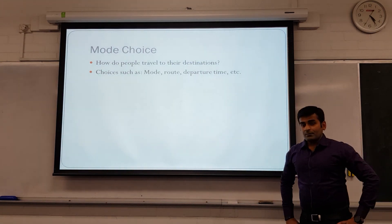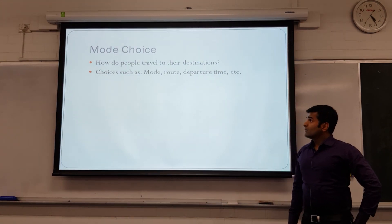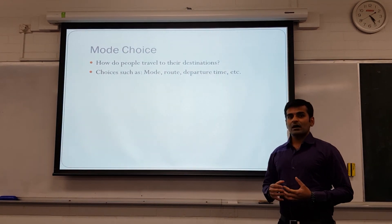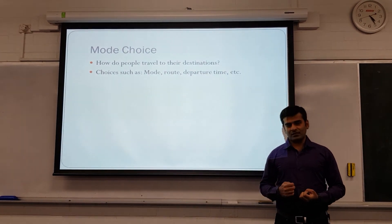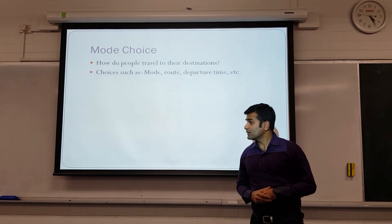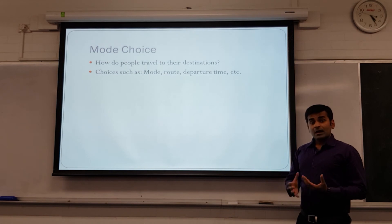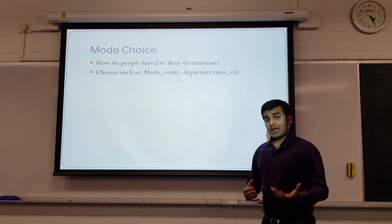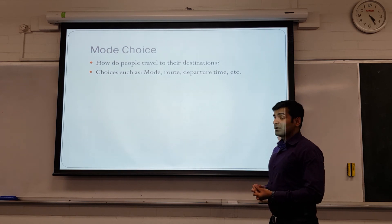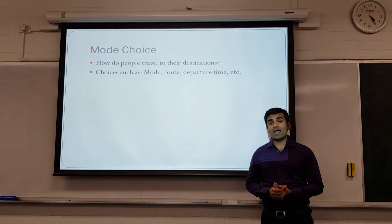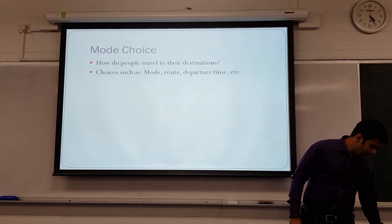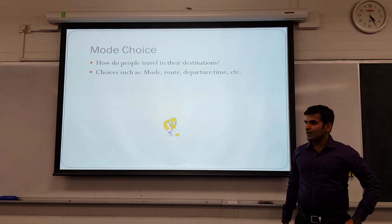The third step of the four-step model is mode choice, where we figure out what different modes people are taking while moving from one zone to another. There are different choices that can be studied in mode choice, which not only includes mode choice but also route choice as well as departure time.